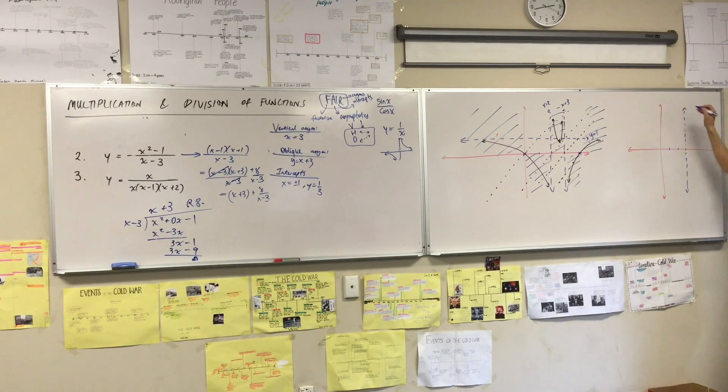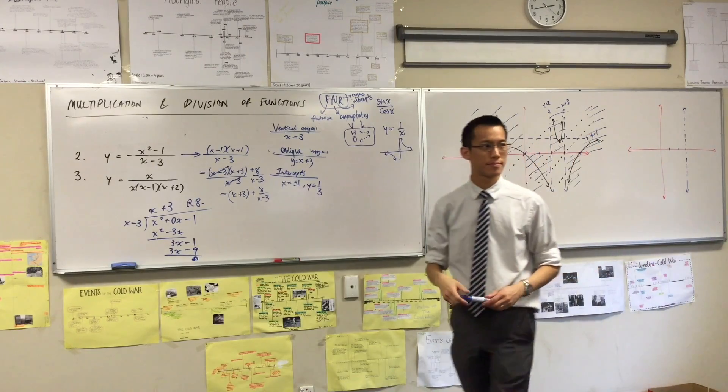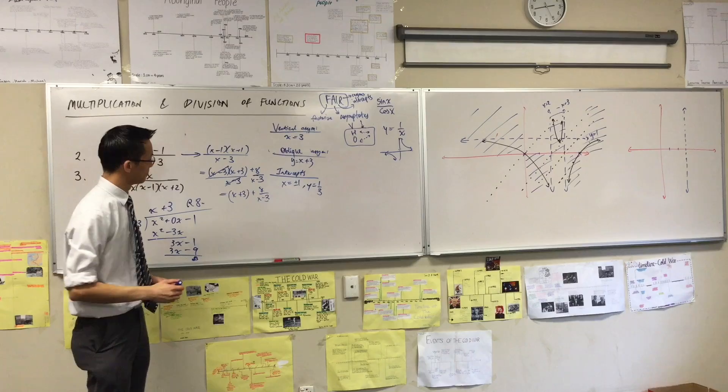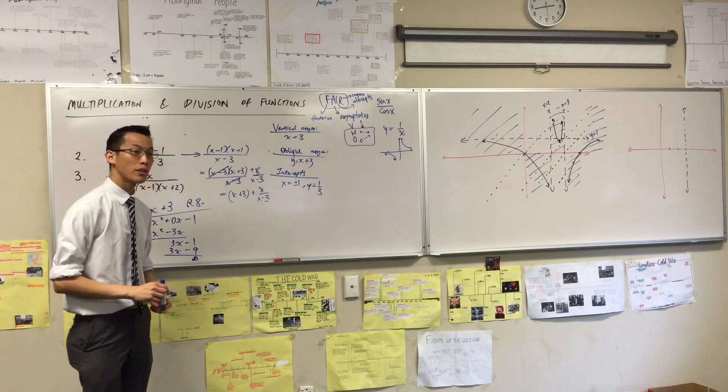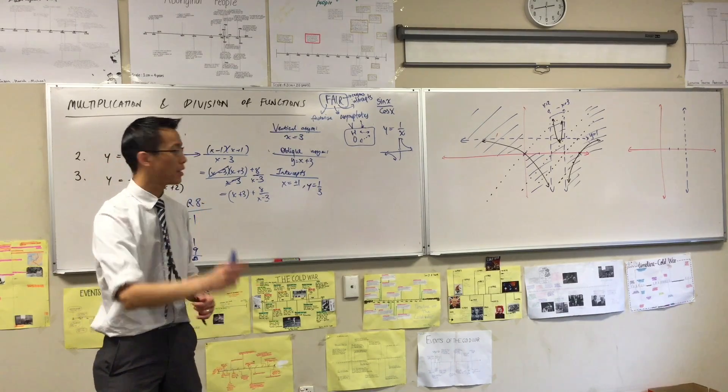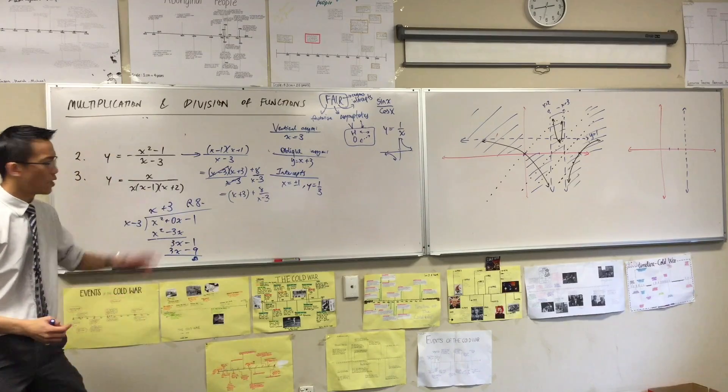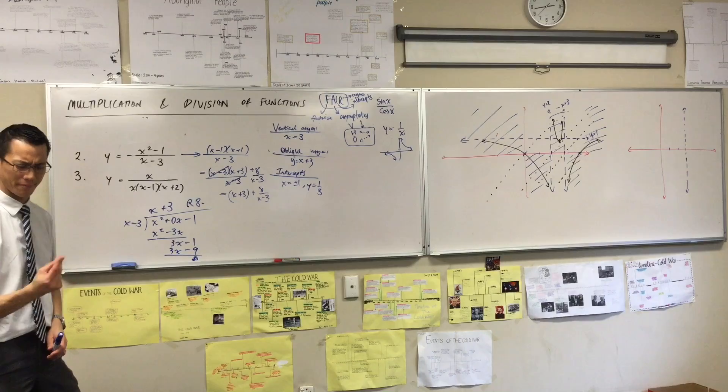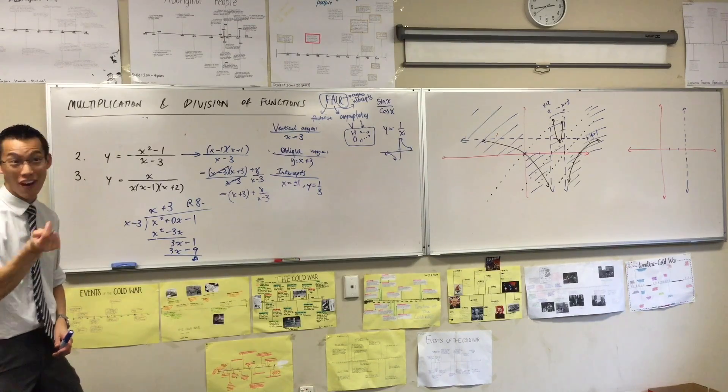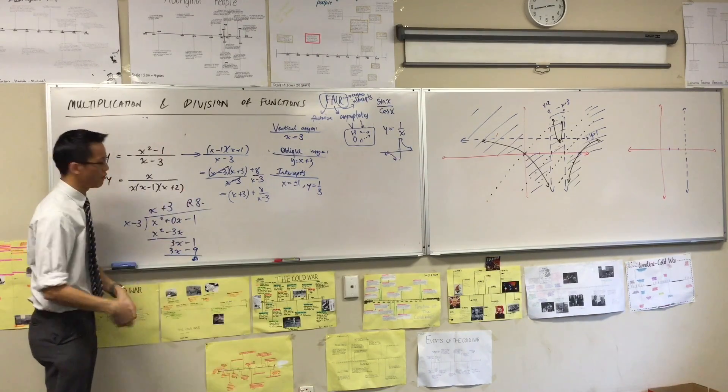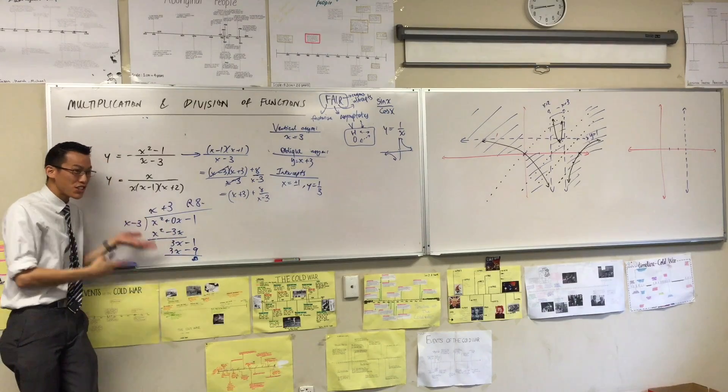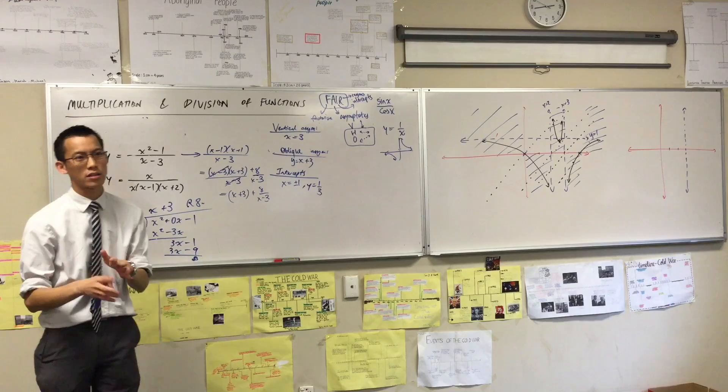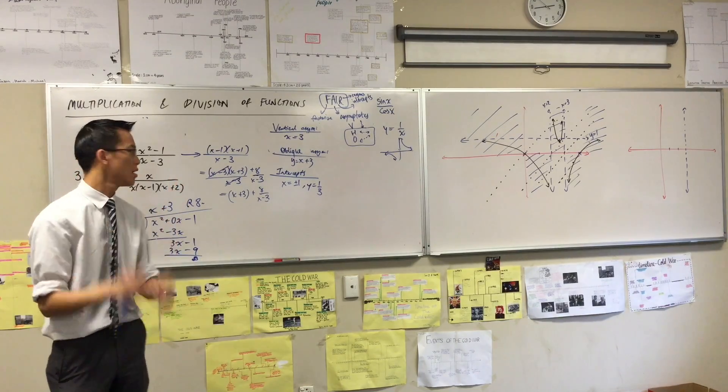Before we continue, is there another way to find the oblique asymptote? The short answer is yes. However, the reason why polynomial division is worthwhile is because it will work every single time. No matter what kind of combination you have, you can divide through.